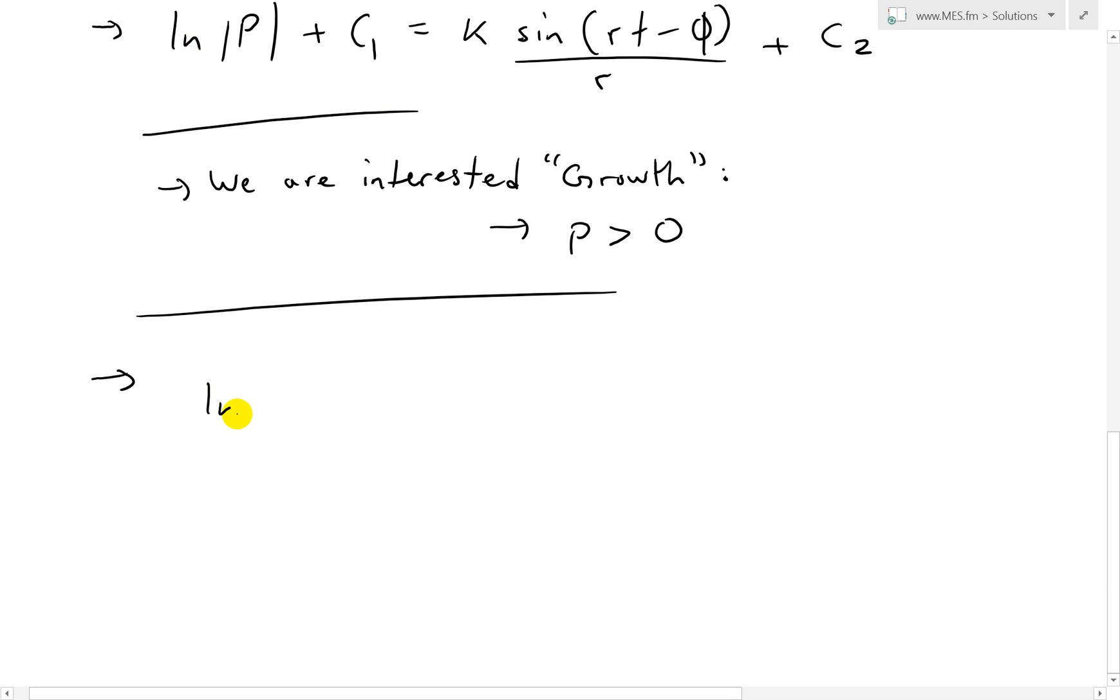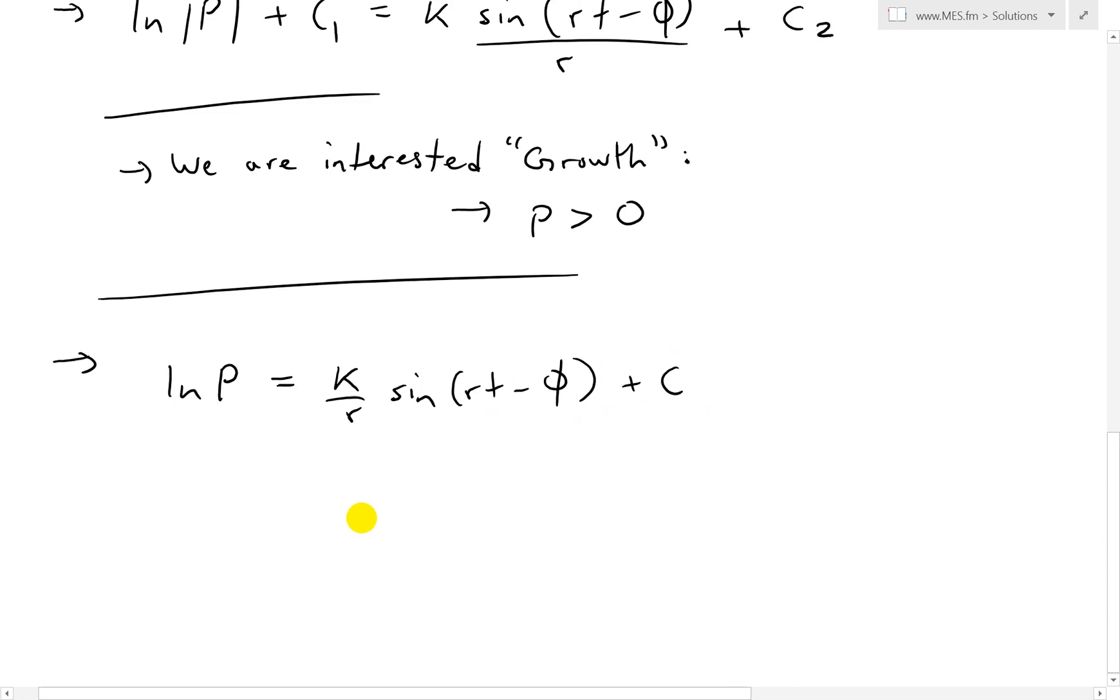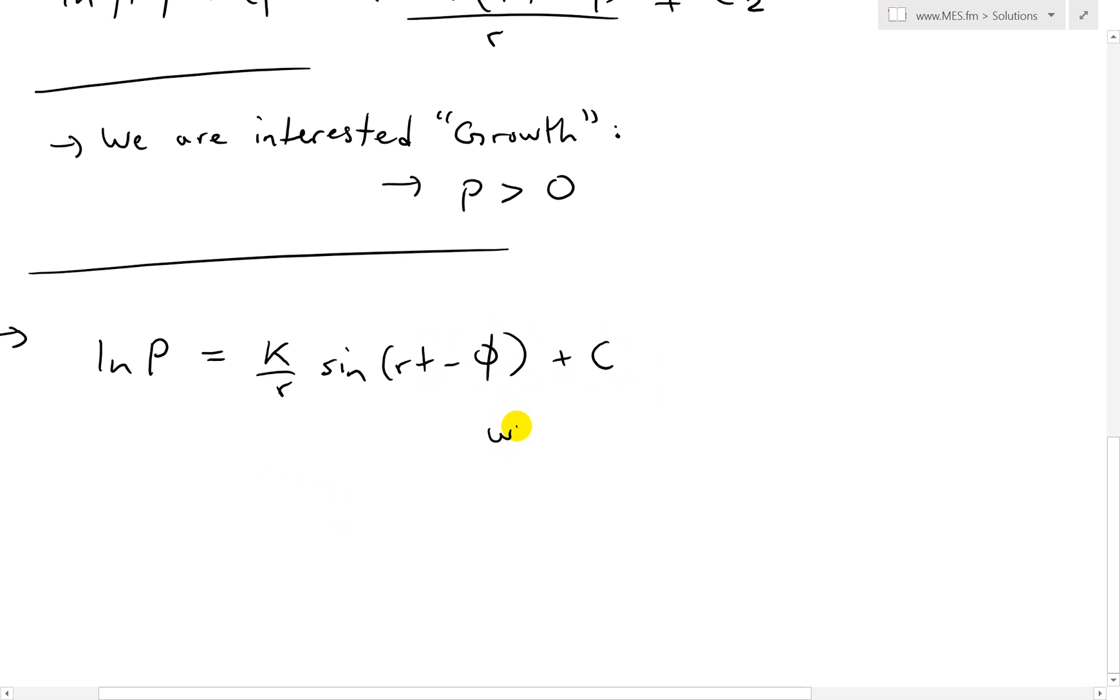So what we get is this ln P, because we're only accounting for P's greater than 0, so we can remove the absolute value sign. This equals to, and move the C1 on the other side, K over R sine Rt minus phi, then plus C. And what I'm going to do here is where C is just equal to C2 minus C1, that's just equals to a constant. So subtraction of constants is still a constant.